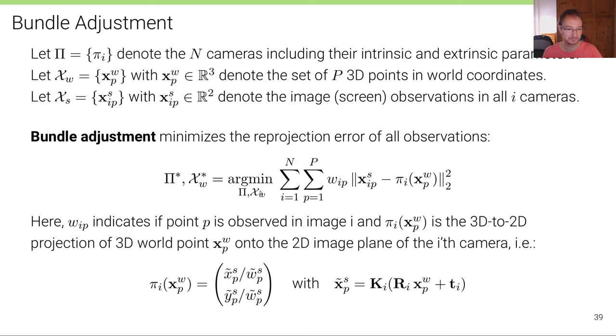Here in this equation, w_ip indicates if a point p is observed in image i and π_i of the world's point, the landmark, is the 3D to 2D projection of that 3D landmark onto the 2D image plane, according to the camera model. Where we have an extrinsic part that transforms from world coordinate to camera coordinate, as well as an intrinsic transformation that goes onto screen or pixel coordinates.